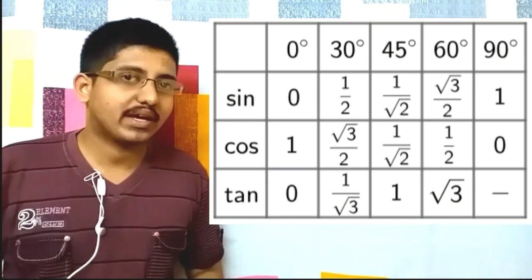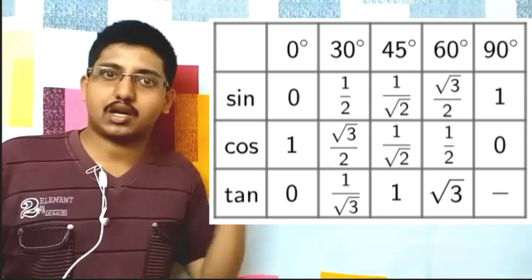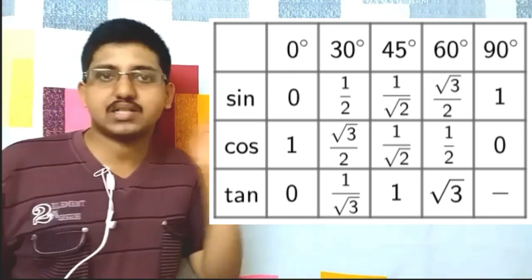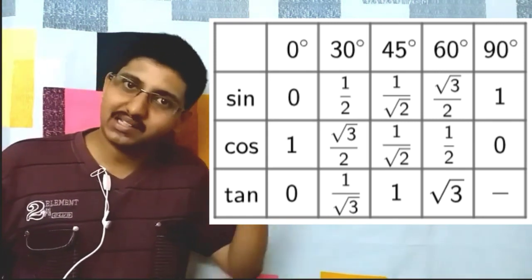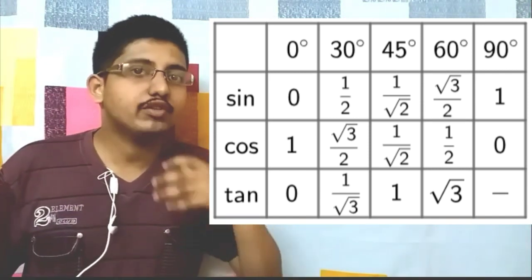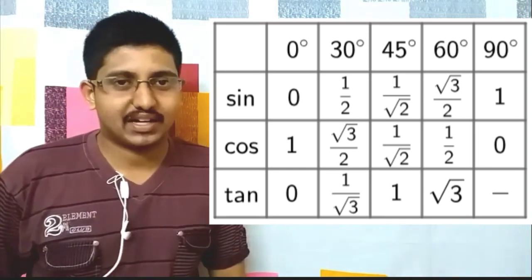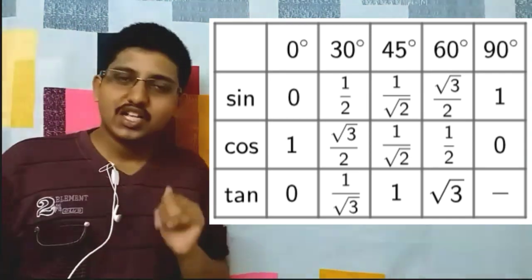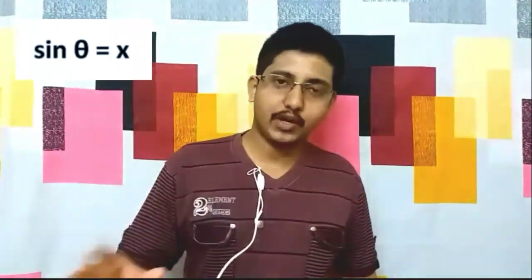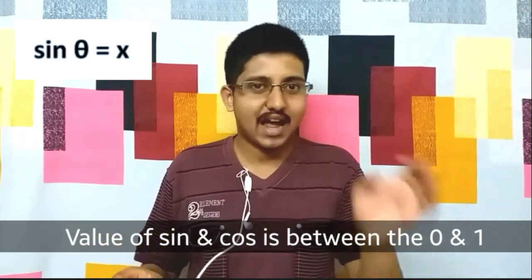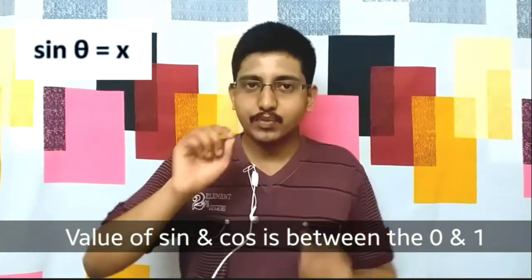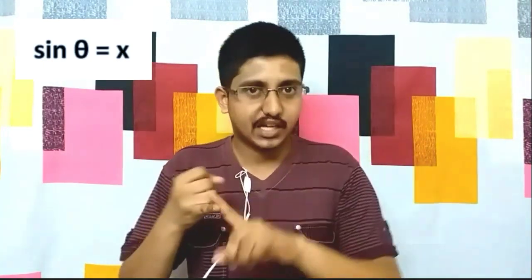The most useful tan value is tan 45° = 1. Now, how do we find angle theta if sine theta, cos theta, or tan theta equals some number other than the standard values? The theta will be some angle other than the standard angles. The method is: if sine theta = x, we know x is between 0 and 1. First, remember the sine values of the standard angles, then look at where x is nearest to.